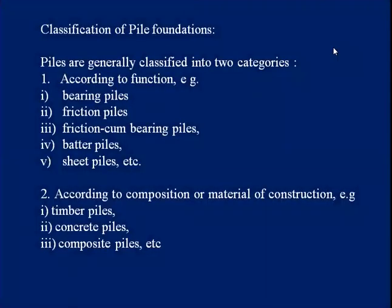Classification of pile foundation: piles are divided into two categories. First, on the basis of function and load transmission, and second, on the basis of composition and material of construction. According to function, piles are classified into five categories: bearing pile, friction pile, friction-cum-bearing pile, batter pile, and sheet pile, among others like fender piles. According to material of construction, piles are classified as timber pile, concrete pile, or composite pile.